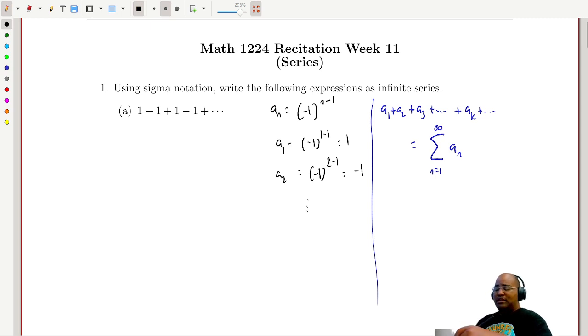So how do we do it for our guy here, 1 minus 1 plus 1 minus 1, which I believe is called Grandi's series? Well, we know what our terms are, our corresponding sequence is minus 1 to the n minus 1, we start at n equals 1 and go to infinity.